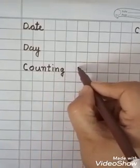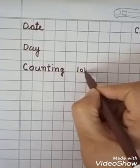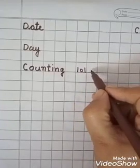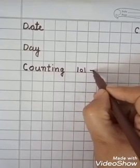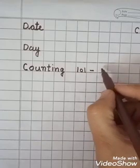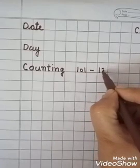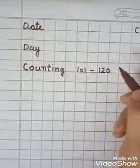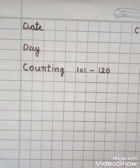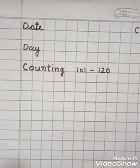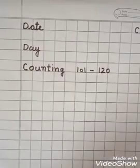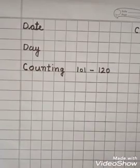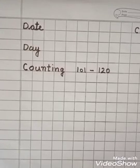Then, leave one box and write down here 101. Then, a slipping line. Then, in the next box, you have to write 120 — 1, 2, 0, it means 120. One more thing: whenever you do this work, you have to write the day or date according to that day.